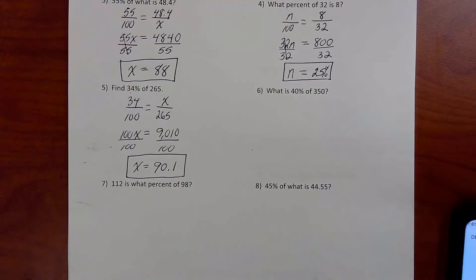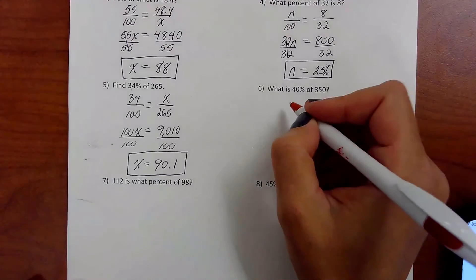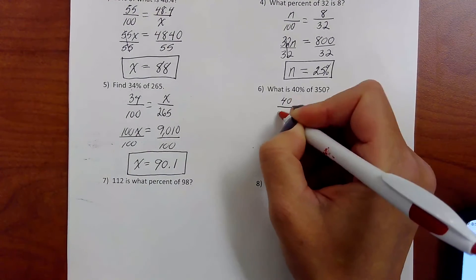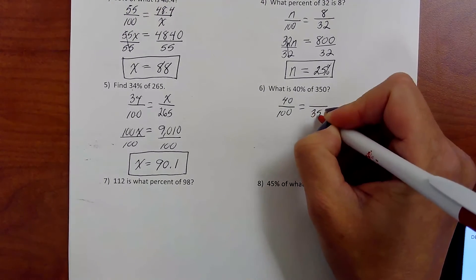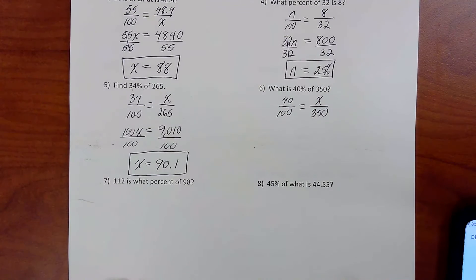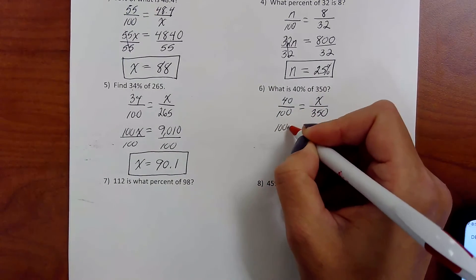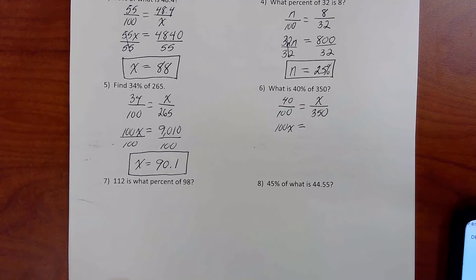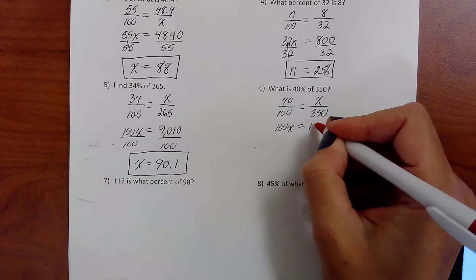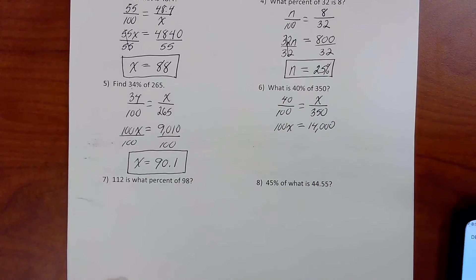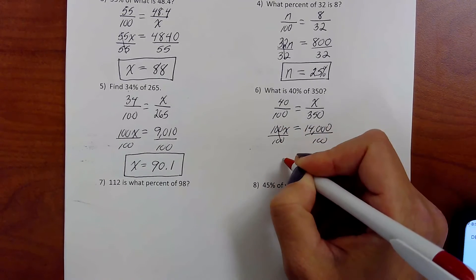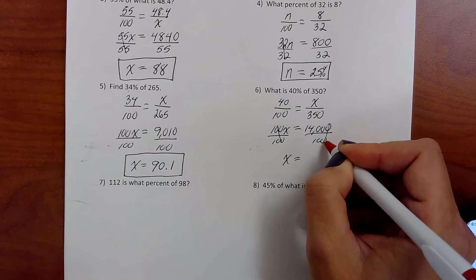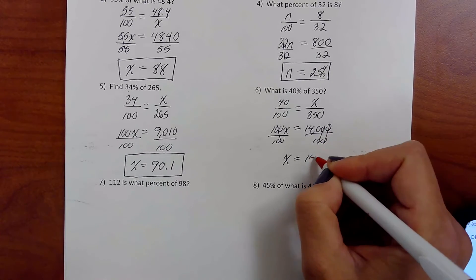All right. Number six. What is 40% of 350? 40% is 40 over 100. Of 350. Where's the 350 going to go? Hopefully you guessed it. On the bottom. And let's cross multiply. 100 times x is 100x. 40 times 350 is 14,000. How are you going to get x by itself? Divide by what's next to it. 14,000 divided by 100. You're going to actually cross off those two zeros. And you're left with 140.